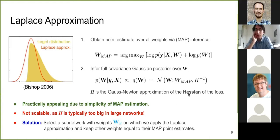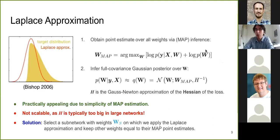You cannot apply this method to the whole network because the Hessian matrix has dimension equal to the number of weights squared — that's too large in practice. The method is simple in that it only requires training your neural network normally to find point estimates, then obtaining a Gaussian approximation around that point estimate. To make it scalable, we propose applying this Laplace approximation only on a subset of the weights.